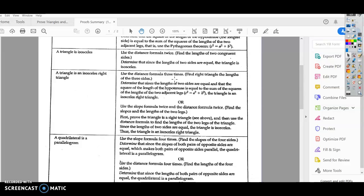Determine that since the length of the two sides are equal and that the square of the length of the hypotenuse is equal to the sum of the squares of the lengths. So basically, see that the Pythagorean theorem works. Find the distance of the three sides and then see if the Pythagorean theorem works. Does a squared plus b squared equals c squared? If so, you're done. You prove that it's an isosceles right triangle.